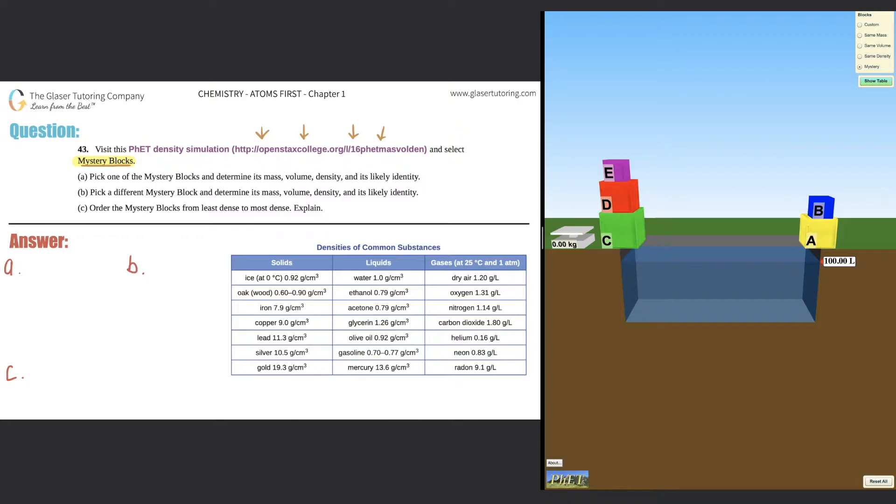So letter A, pick one of the mystery blocks and determine its mass, volume, density, and its likely identity. Now this likely identity is going to come from this lovely chart of densities of common substances. But in order to do that, we have to first find out its density.